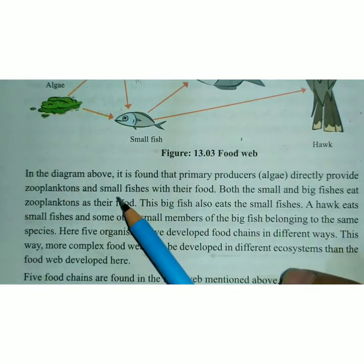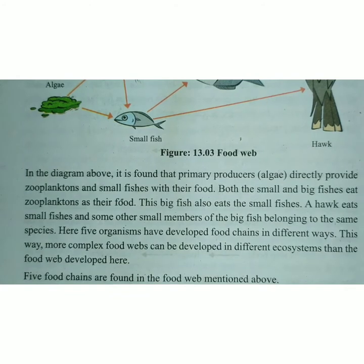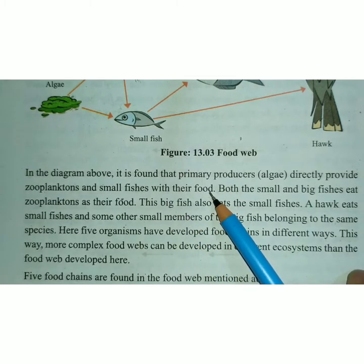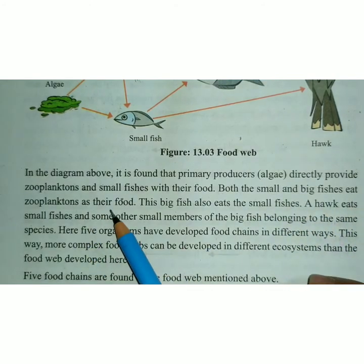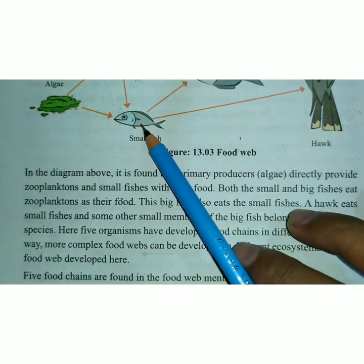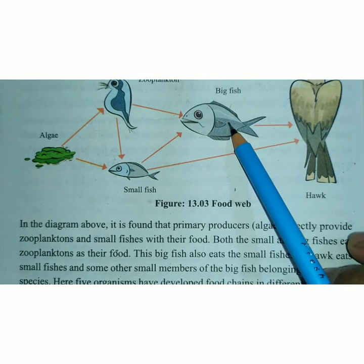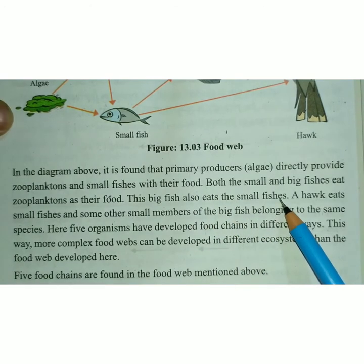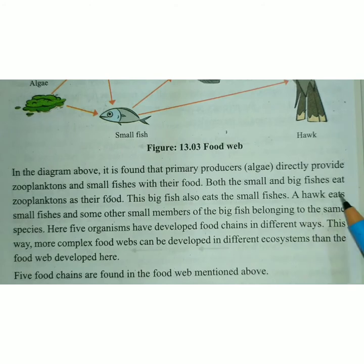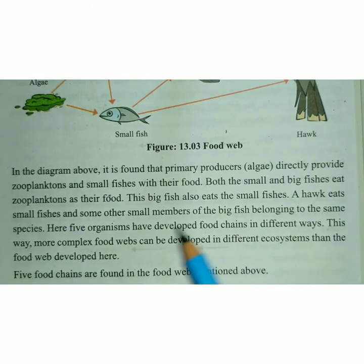As shown in the diagram, the primary producer algae directly provides zooplankton and small fish with their food. Both small fish and big fish eat zooplankton as their food. Big fish also eat small fish. A hawk eats small fish and some smaller members of the big fish belonging to the same species.